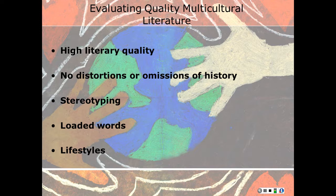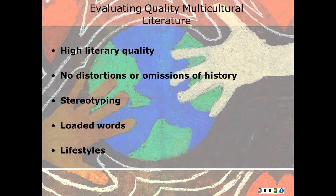Multicultural books ought to measure up to the criteria used to judge literature in general. It should be of high literary quality, with no distortions or omissions of history. Look for various perspectives to be represented. Stereotyping: there should be no negative or inaccurate stereotypes of the ethnic group being portrayed. Loaded words: there should be no derogatory overtones to the words used to describe the characters and culture, such as savage, primitive, lazy, or backward.